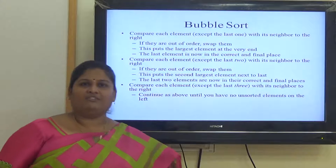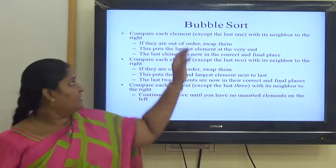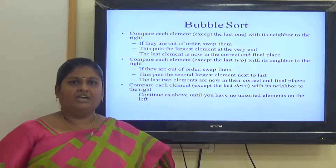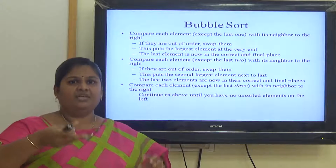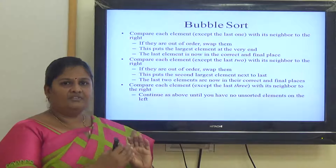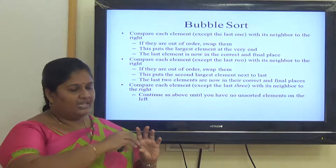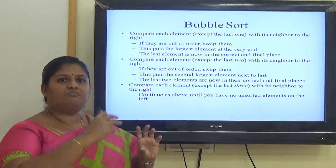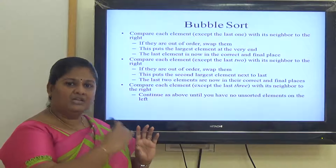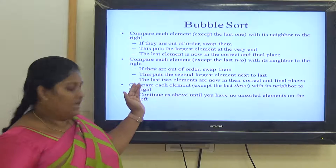Bubble sort. To start with a simple algorithm — bubble sort. What is bubble sort? The name itself says bubble. For example, when you have a bubble in a bucket, it will just come to the surface. The same manner, when you have a set of data items, the largest data will bubble — that means, if it is in any position, it will just bubble and come to the last position. The second largest element will bubble and come to its second largest position. That is the algorithm.